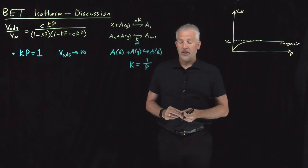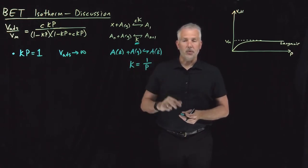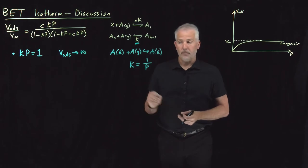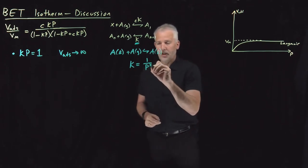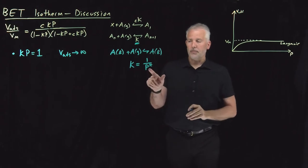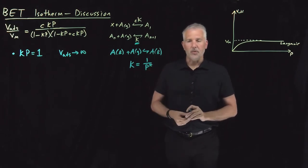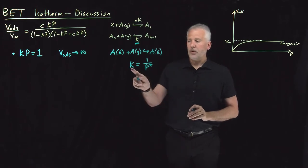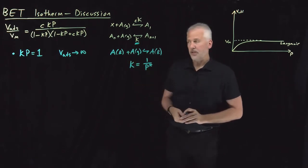In particular, this is 1 over the pressure under conditions where the reaction is at equilibrium—that is, the saturated vapor pressure of the gas. So we write P* for the vapor pressure, and the equilibrium constant K equals 1 over P*, the vapor pressure of the adsorbate.